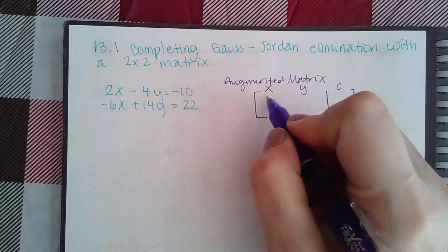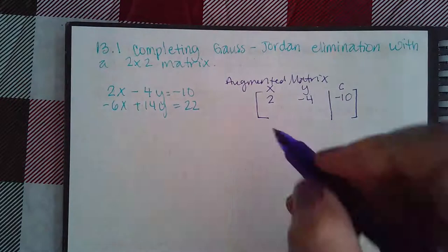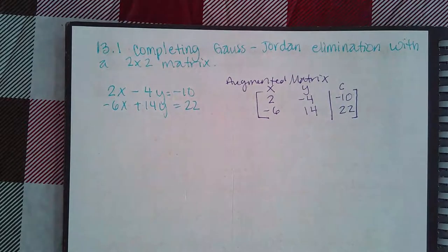So here this matrix would become 2, negative 4, negative 10 for the top equation. And then negative 6, positive 14, and 22 for the bottom equation.